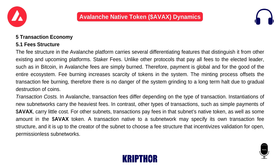Transaction costs: in Avalanche, transaction fees differ depending on the type of transaction. Instantiations of new subnetworks carry the heaviest fees. In contrast, other types of transactions, such as simple payments of AVAX, carry little cost. For other subnets, transactions pay fees in that subnet's native token, as well as some amount in the AVAX token. A transaction native to a subnetwork may specify its own transaction fee structure, and it is up to the creator of the subnet to choose a fee structure that incentivizes validation for open, permissionless subnetworks.